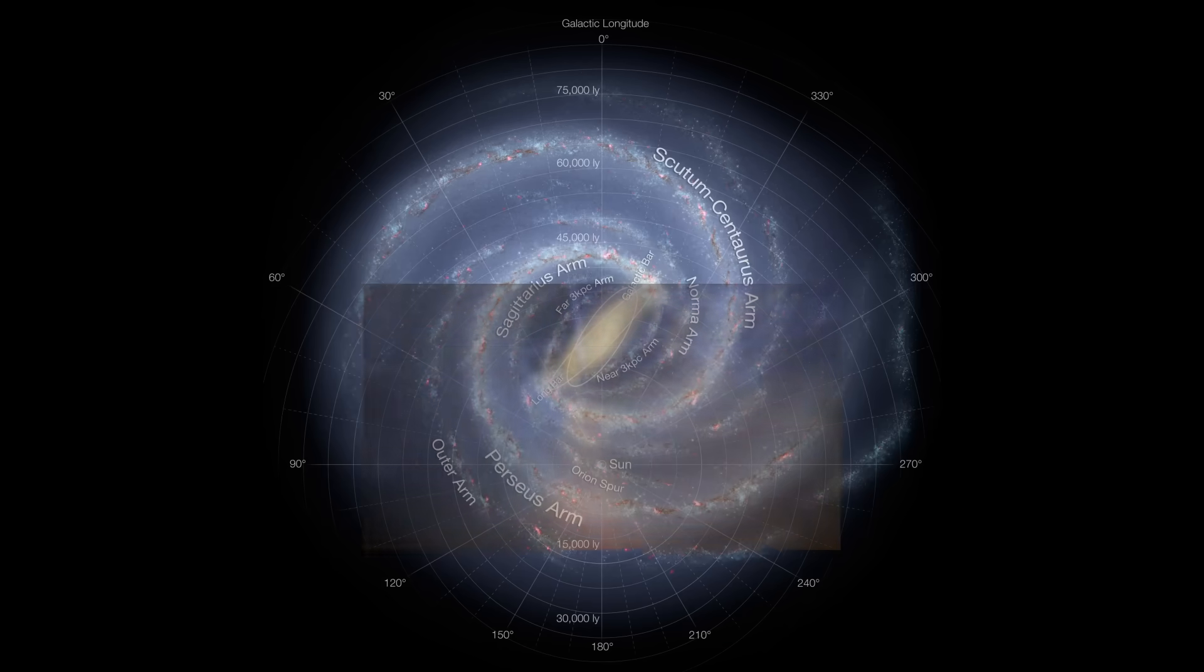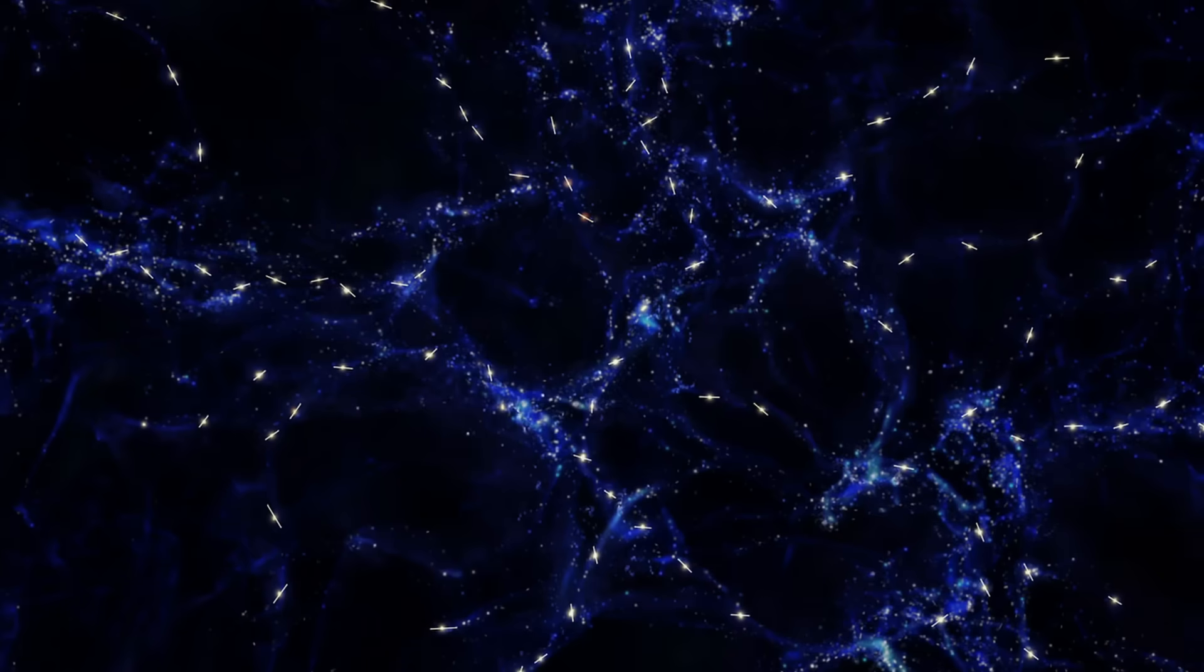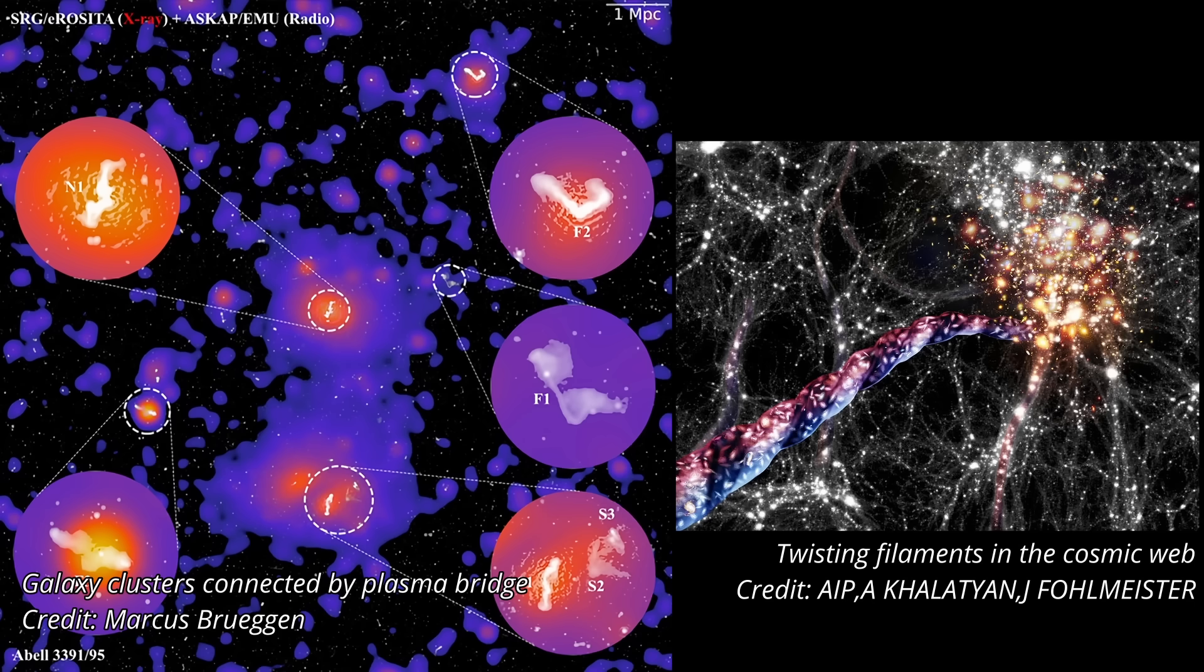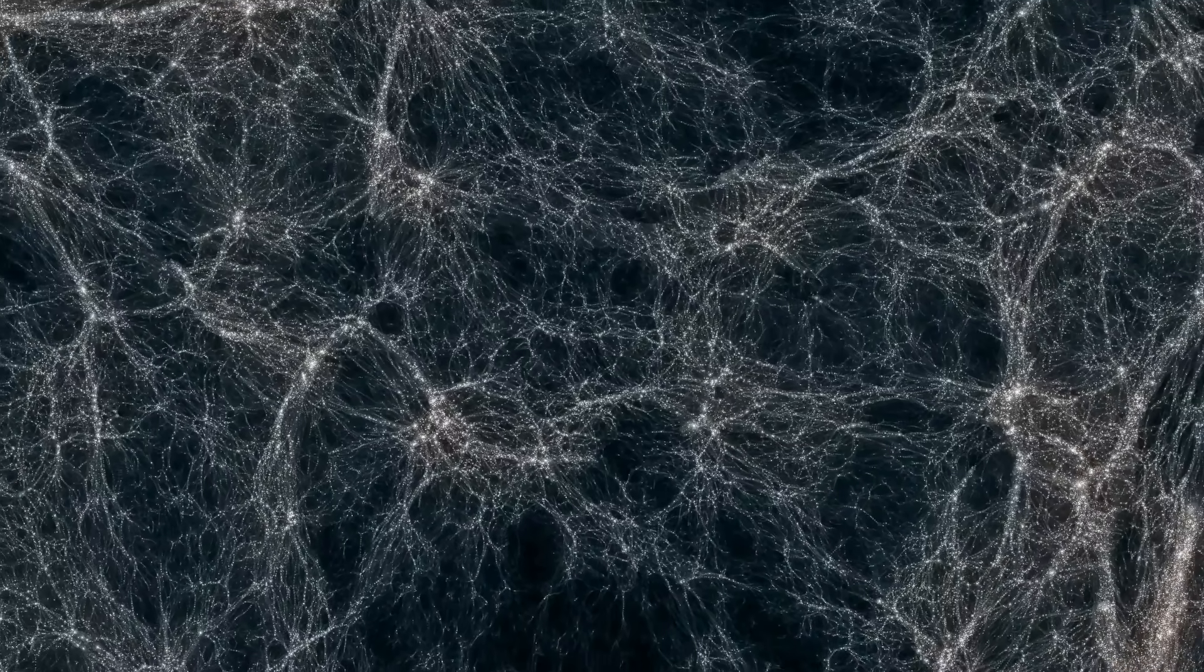And as we zoom out, the pattern continues. Around galaxies, we see vast filaments of gas connecting them, thought to funnel material directly into the galactic disk and fuel star formation. On even larger scales, these galactic filaments stretch between clusters, forming the Great Cosmic Web, which itself is believed to channel gas into galaxies and clusters, sustaining their growth.